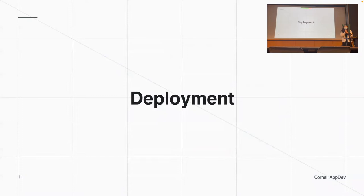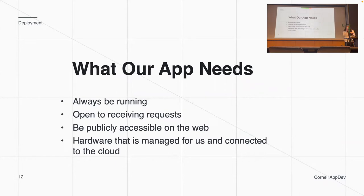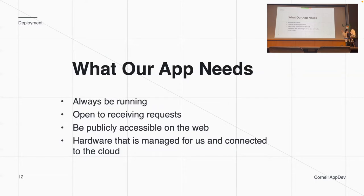Deployment is the process of making your app publicly accessible. When we run Docker containers, the process still has to always be running. For a large app like Facebook, we want it to always be running — we don't want it to only be usable when a developer has the thing running on their laptop. We also want it to be open to receiving requests at all times, publicly accessible, so a developer living in California could access our server.